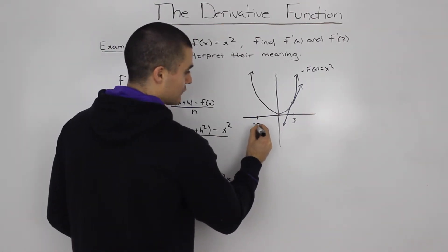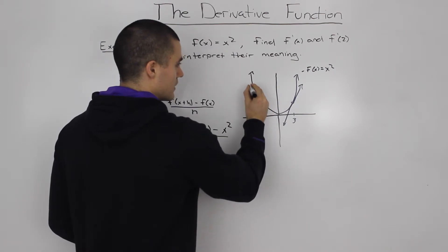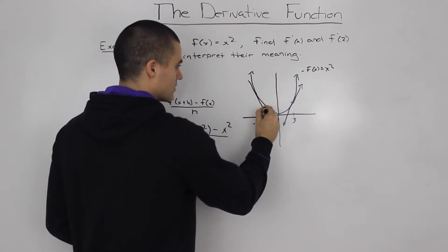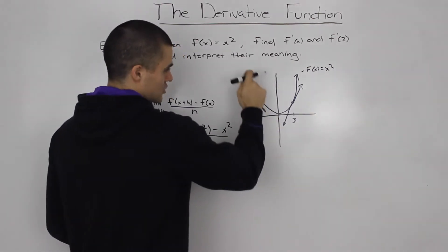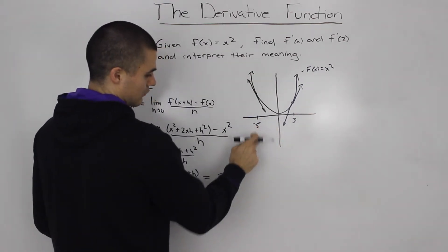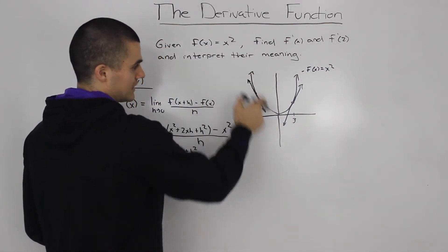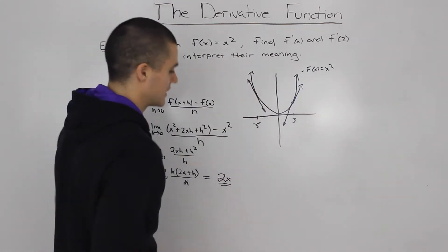We could also find it at negative 5. So, negative 5, if we drew a tangent here, the slope of this tangent, if we plug in negative 5 here into the derivative, it'll be negative 10. The slope of that line will be negative 10.